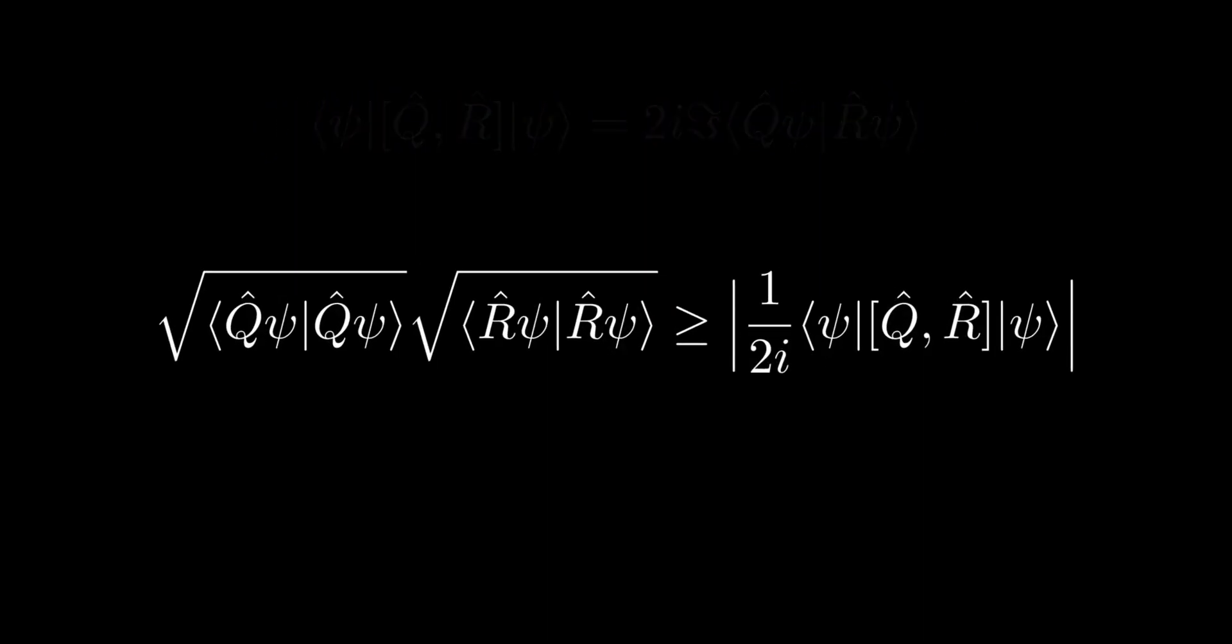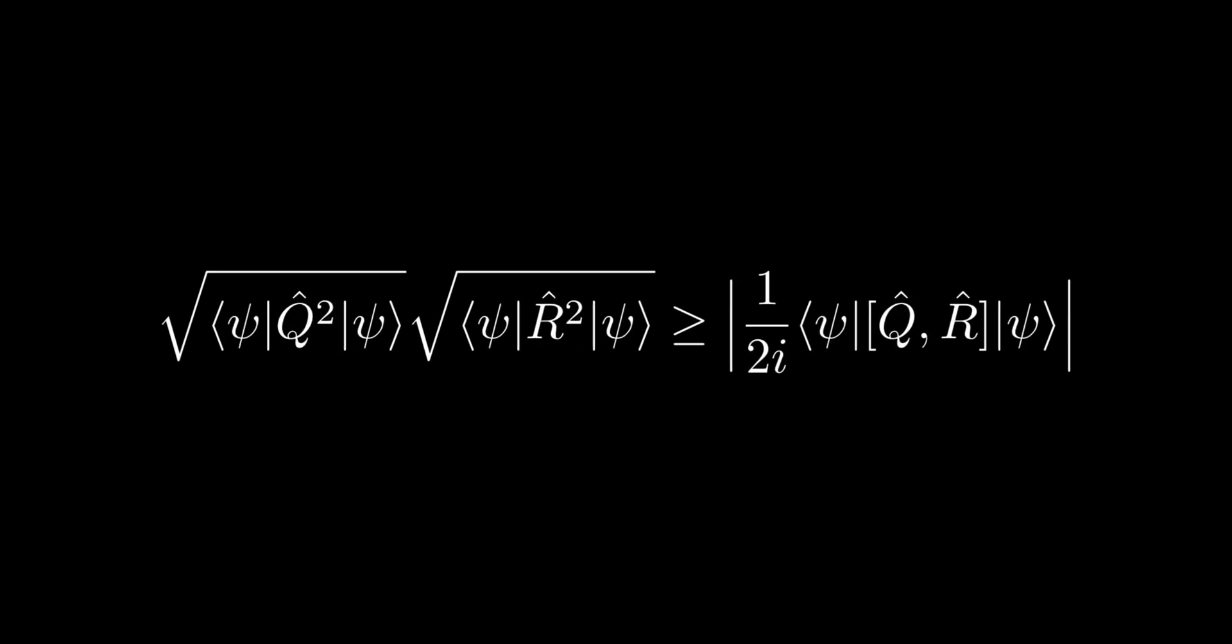Then, because both Q and R are Hermitian operators, we can move them from the left argument to the right argument. And then we note that the operator sandwiched between the same quantum state is just the expectation value, we make a further simplification.